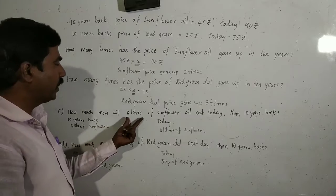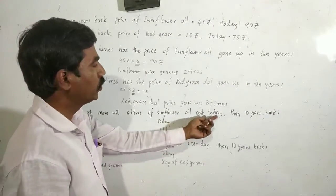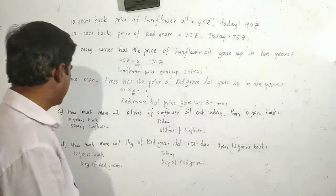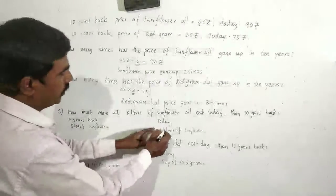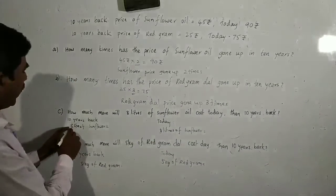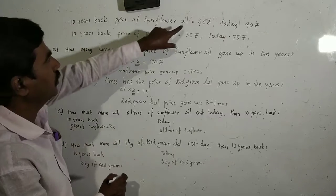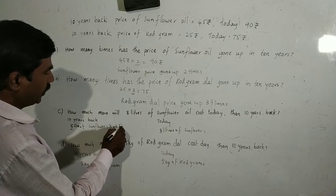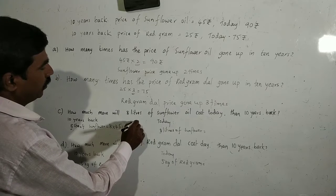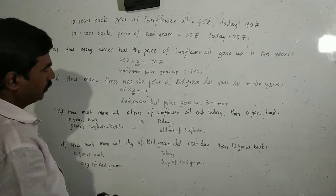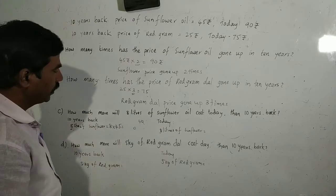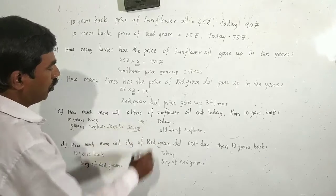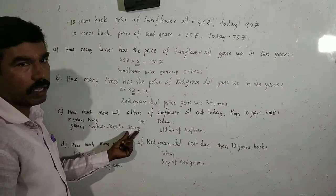How much more will 8 litres of sunflower oil cost today than 10 years back? To find how much more, we calculate 10 years back cost and today's cost. 10 years back: 8 into 45 — 8 times 5 is 40, carry the 4; 8 times 4 is 32, 32 plus 4 is 36. So 8 litres cost Rs. 360 rupees ten years back.